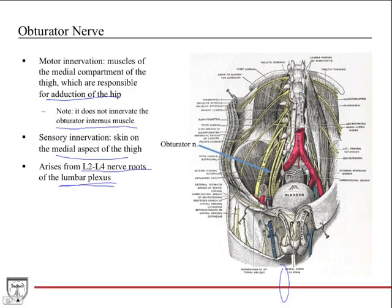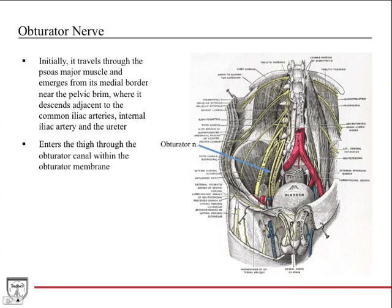Here's a great picture of the lumbar plexus in the abdomen and pelvis. These labels are very small, so we blew it up and labeled it clearly. Here's the obturator nerve coming off those L2 to L4 nerve roots. Initially it travels through the psoas major muscle — the psoas is actually cut away in this diagram, so here's the psoas right here.